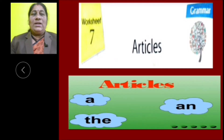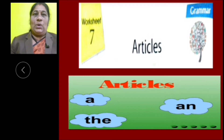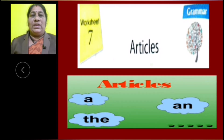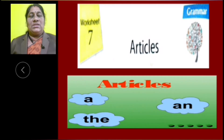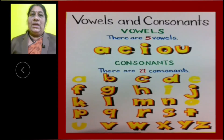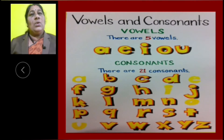What are articles? A and the are called articles. Articles are used with nouns. A and AN are used with vowels and THE is used with consonants. So, let us see what are vowels and consonants. Children, there are 26 letters in the English language. Out of 26, 5 are vowels and 21 are consonants.